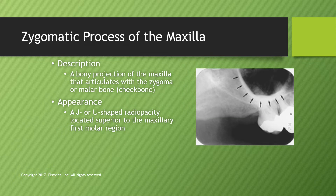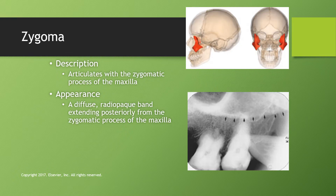The zygomatic process of the maxilla is the bony projection of the maxilla that reaches out to touch the zygoma — also called the malar bone. It is always shaped like a J or U above the maxillary molars. The zygoma attaches to that maxillary process, and this structure is the cheekbone.